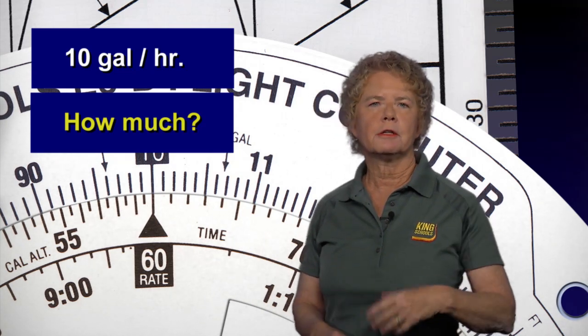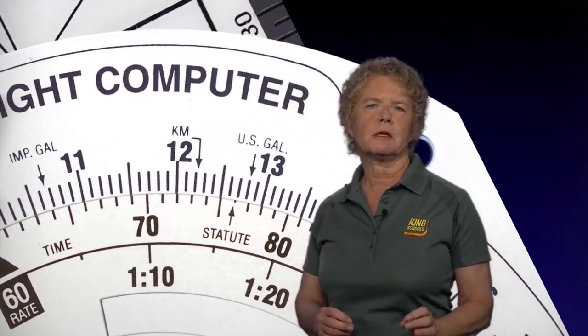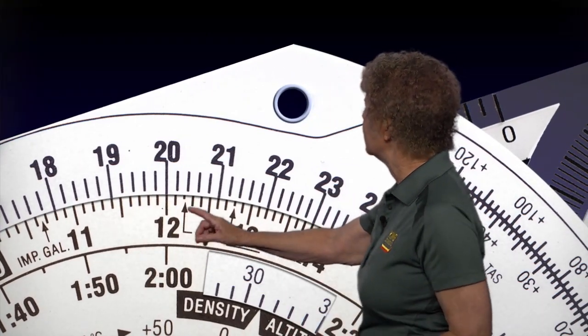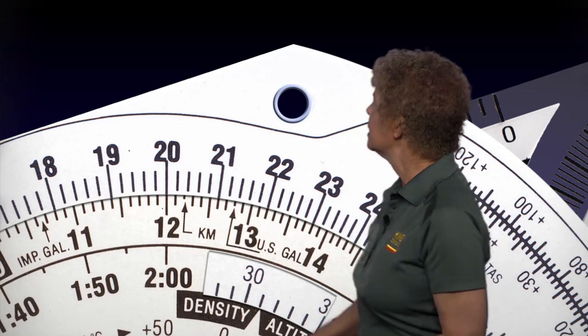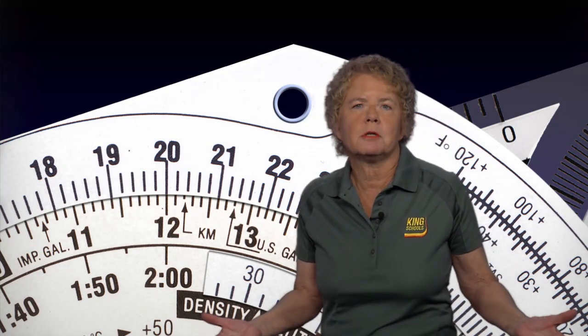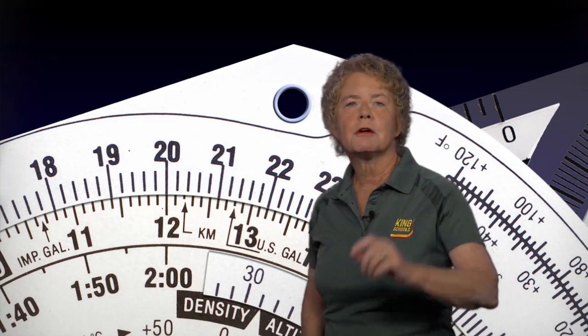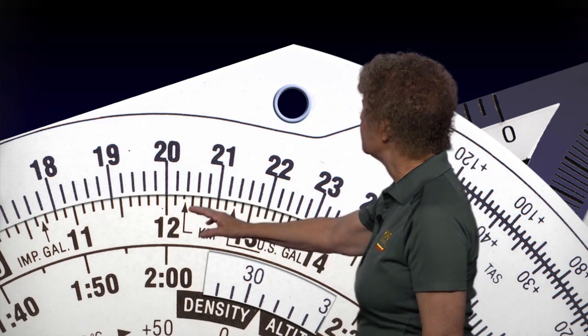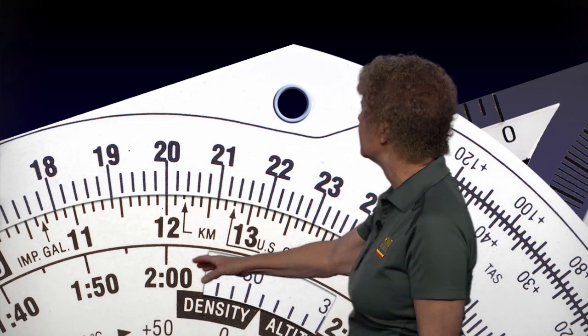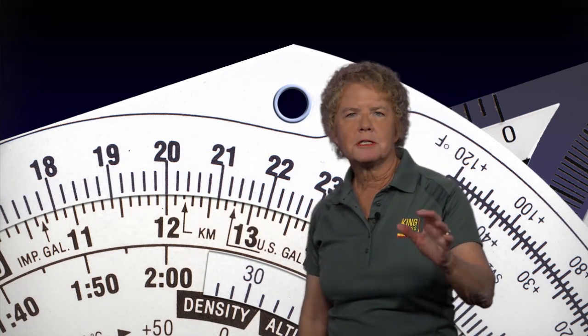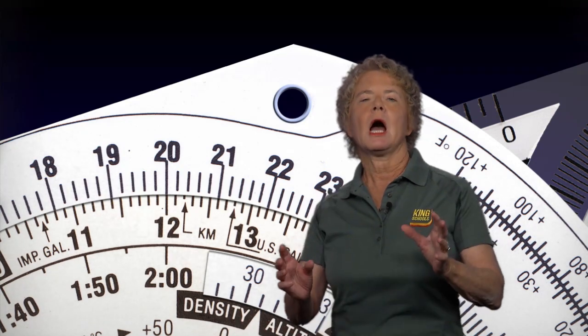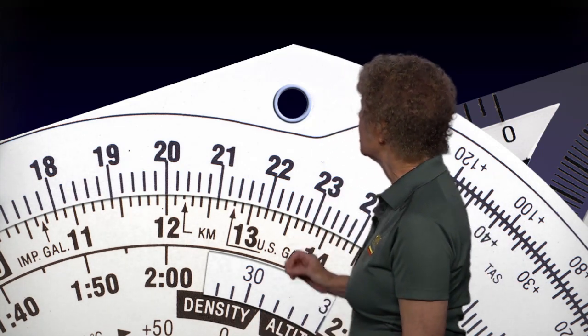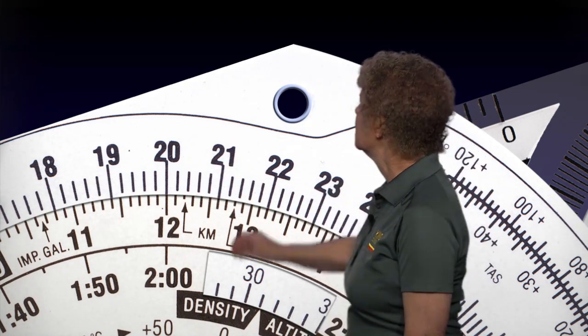Now let's look at it on the flight computer. Find 2 hours on the inner scale — that's 120 minutes, so find the 12 on the inner scale to represent 120 minutes. The far inner scale confirms that 12 represents 120 minutes, which is 2 hours. On the outside scale above the 12, we can read how many gallons we'll use in 2 hours: 20 gallons, just as we figured in our head.